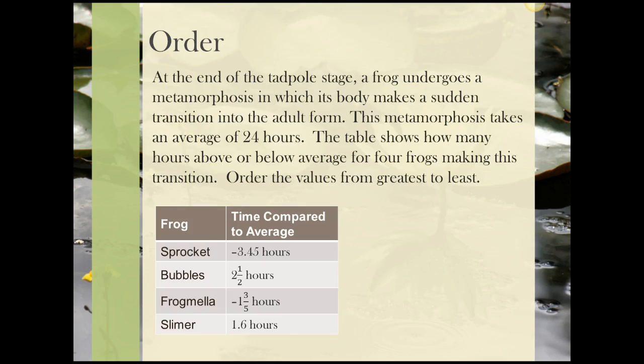Let's do our final problem. At the end of the tadpole stage, a frog undergoes a metamorphosis in which its body makes a sudden transition into the adult form. This metamorphosis takes an average of 24 hours. The table shows how many hours above or below average for four frogs making this transition. We have sprocket, bubbles, frogmella, and slimer, and the time of their metamorphosis compared to the average of 24 hours. We want to order them from greatest to least.